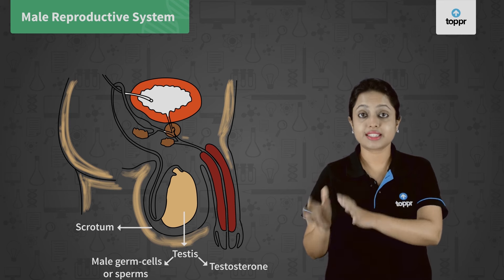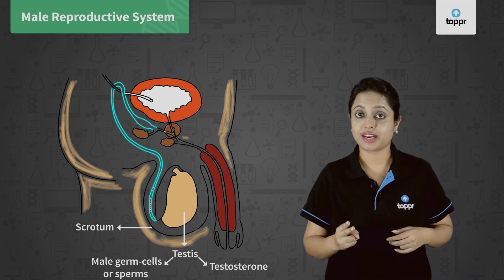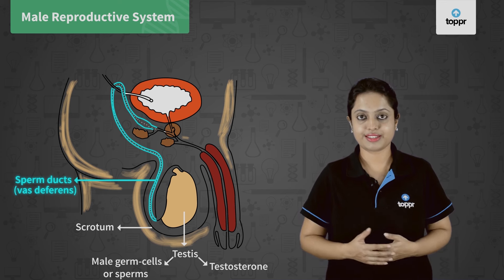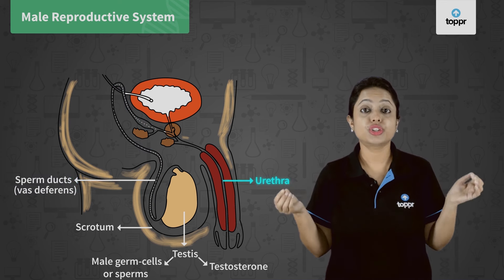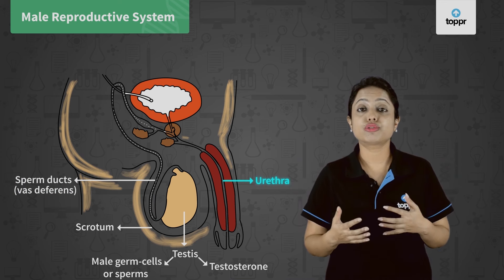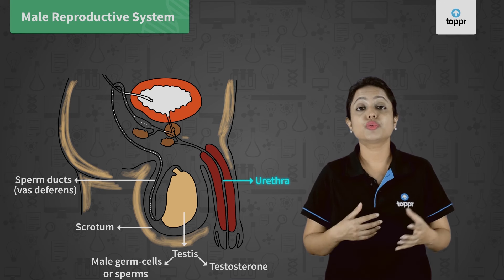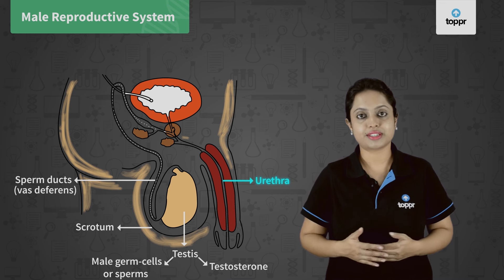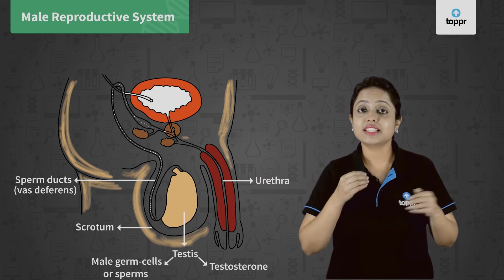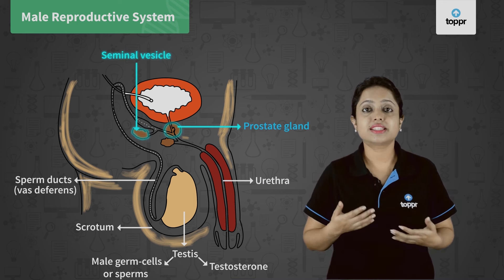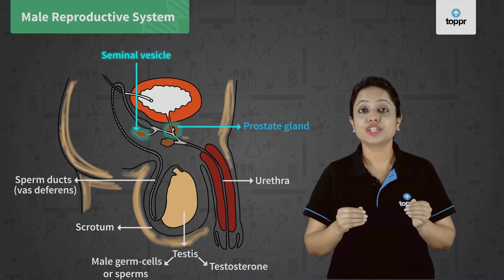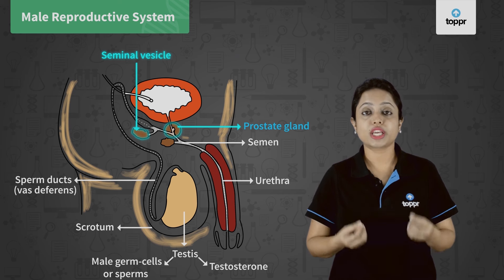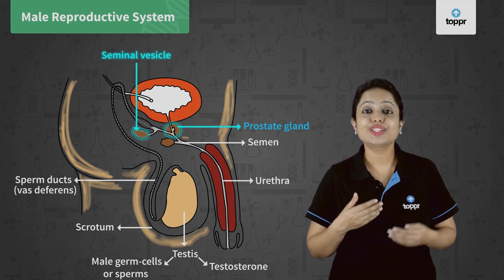The sperms formed in the testes are delivered by two ducts arising from the testes, known as sperm ducts or vas deferens. The vas deferens combines with the urethra, which is a tube coming out from the urinary bladder. Thus, the urethra forms a common passage for both urine and sperms. As sperms pass through the ducts, accessory glands like the prostate and seminal vesicle add their secretions to the sperms. This fluid secretion is known as semen, which makes transportation of sperms easier and provides nutrition to them.